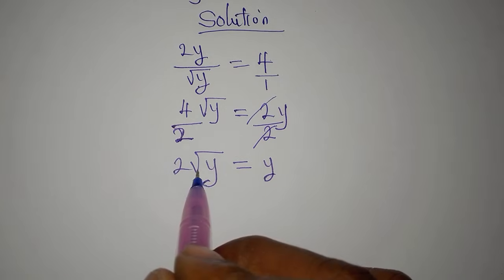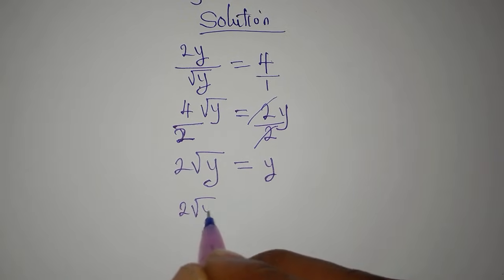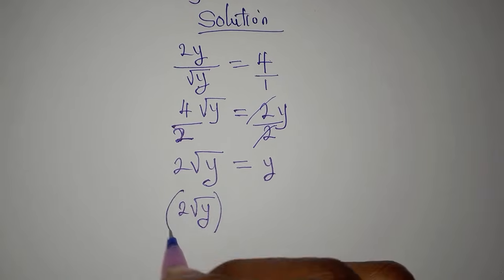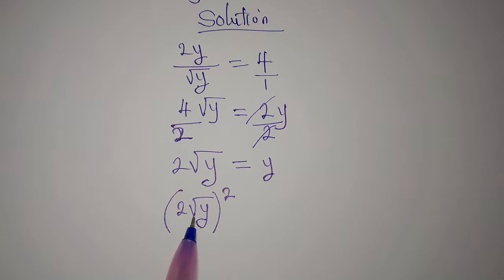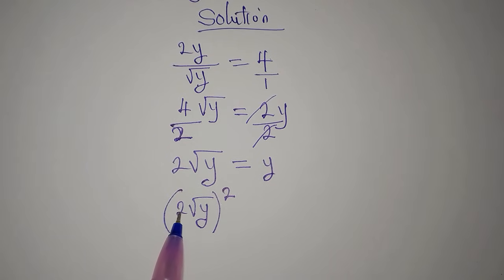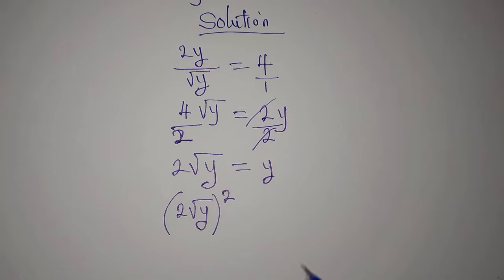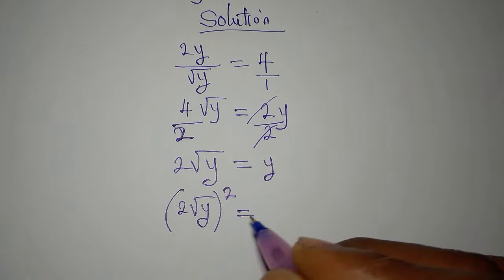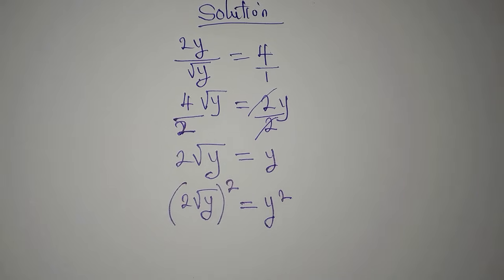The next step is to remove the square root. We have 2 square root of y, and to remove that we need to square it. Do not square only the root y — it is attached to the 2, so you have to put everything in brackets and then square it. What you do on one side must be done on the other side, so y will be squared as well.